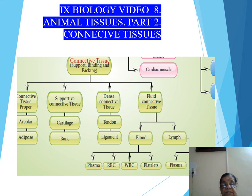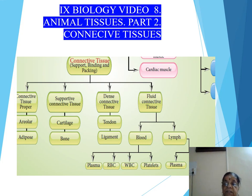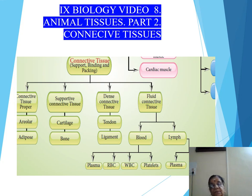Connective tissue proper includes areolar and adipose tissue. These are formed of fibrous structures called yellow fiber and white fiber. Adipose tissue forms a stratified layer of connected tissues that store fatty substances. Supportive connective tissue, as the name suggests, gives support to the body and supports movement.